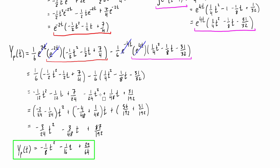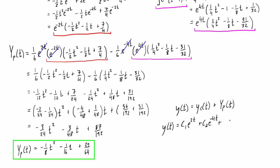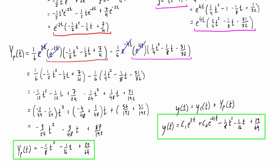Let's box that because that is our particular solution. If you were only asked to find the particular solution, you can stop here. But if you need the general solution, it's simply the complementary solution plus the particular solution: y = c1·e^(2t) + c2·e^(-4t) + (1/8)t² - (1/16)t + 29/64. Let's box that as the general solution to the original differential equation.